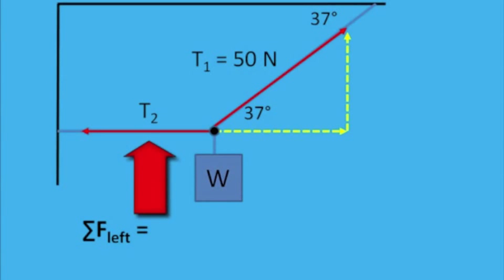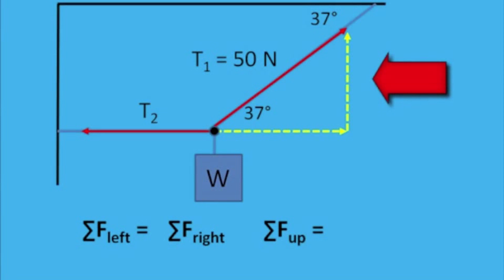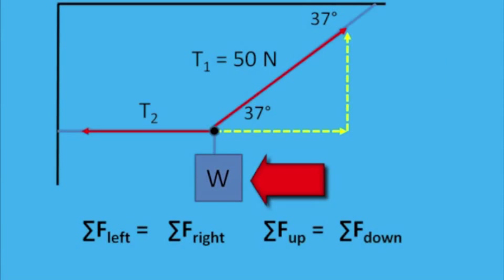Now I know that the force to the left, T2, equals that horizontal component to the right. It's the only force to the right, the only one to the left. And I know that the only force acting up is that vertical component. And it must equal the only force acting down, which is the weight.